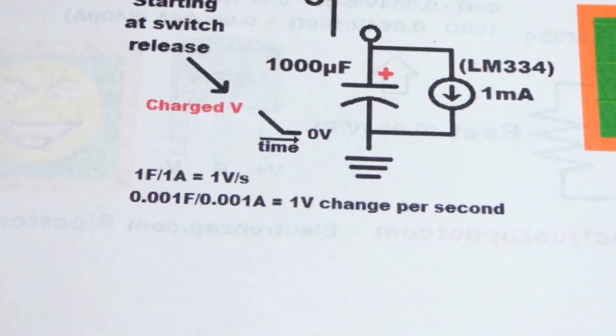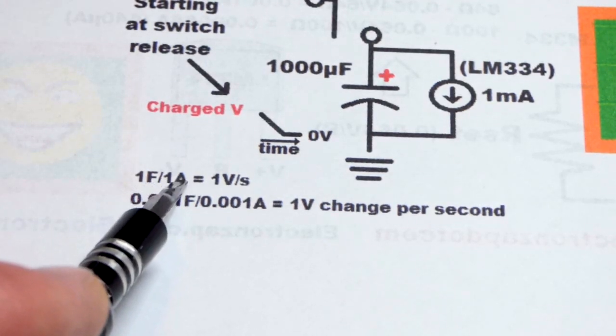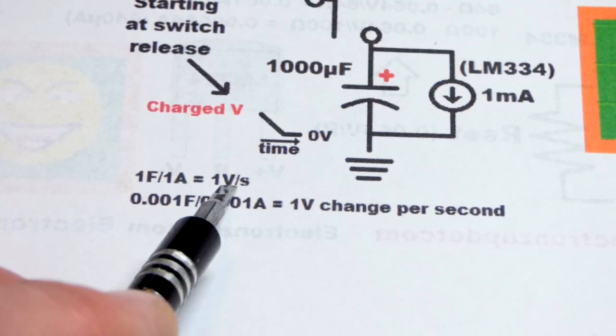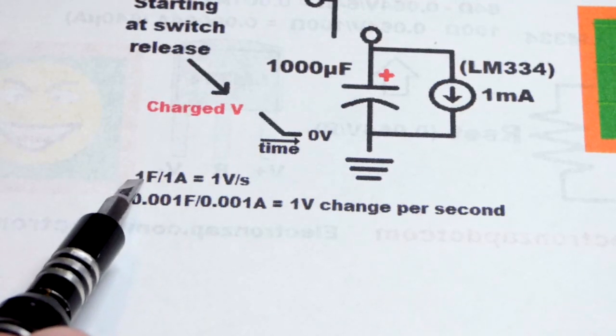If we were using a super capacitor at one farad, and we were either charging it or discharging it at one amp, we would get a one volt change per second. In fact, that's how they figure out what the capacitance of capacitors is.